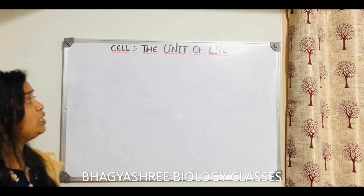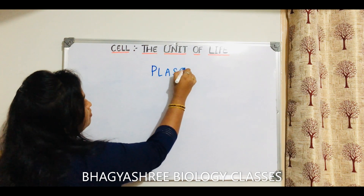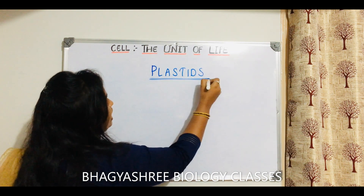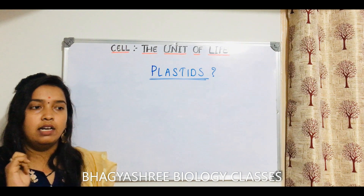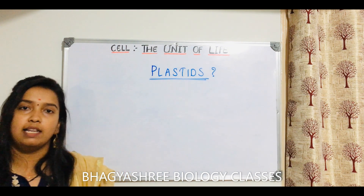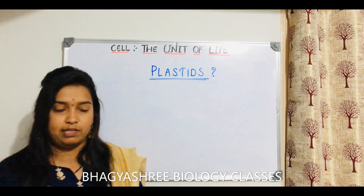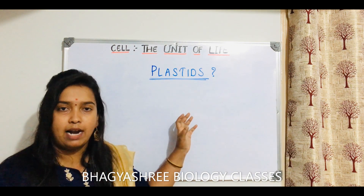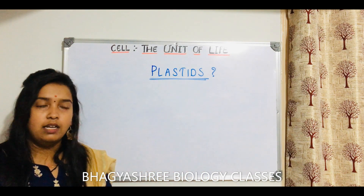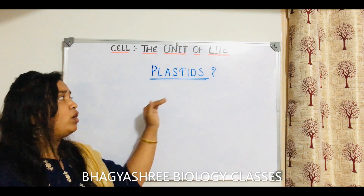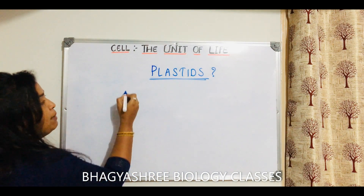Today we will be talking about plastids. You people have already heard about plastids when we were studying about the difference between animal cell and plant cell - plastids are present in plant cells and not in animal cells. So by that only you can understand that they are most useful for plants. Plastids are cell organelles.